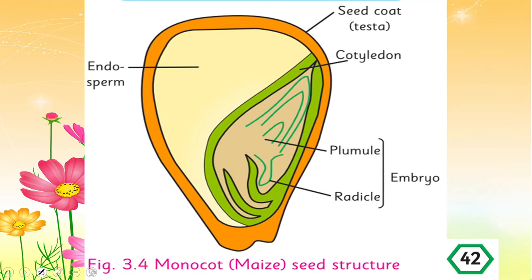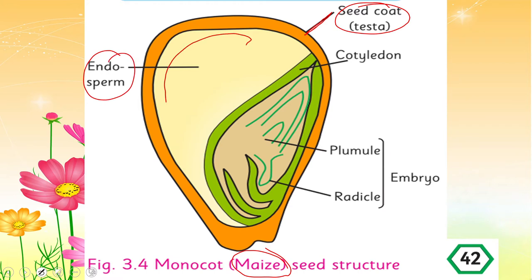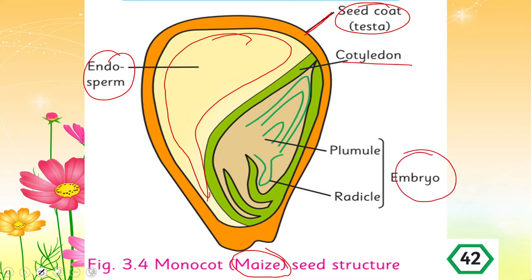This outer covering is called the seed coat, also called testa. The large yellow-colored portion you can see is the endosperm — it is the reservoir. Moving forward, the cotyledon is present, and under the cotyledon the embryo is present. The embryo has two portions: the plumule and the radicle.